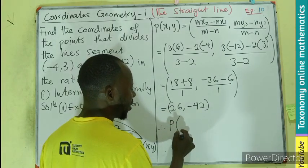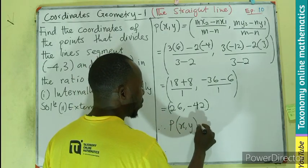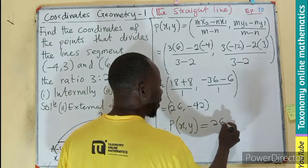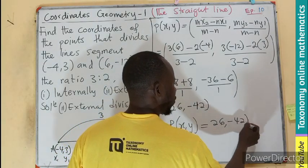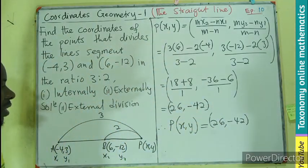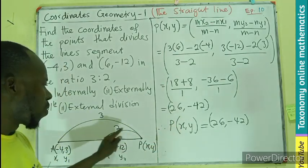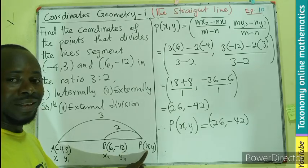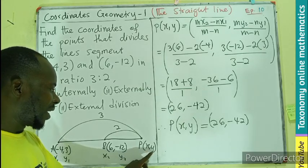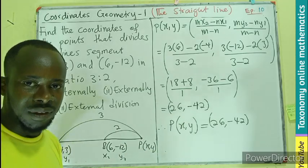So therefore, the point P(x,y) will be equal to (26, -42). That is the external division. If you have the external division, the line, the coordinate of P, the X will be 26, then the Y will be -42.